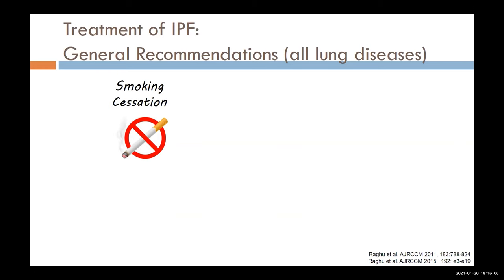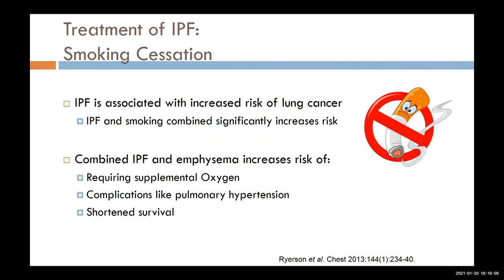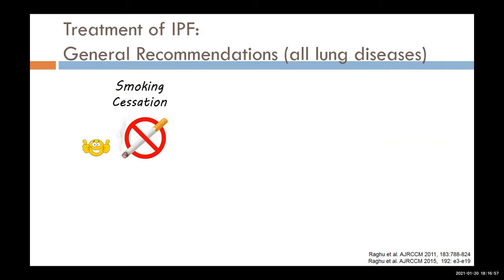The first treatment recommendation for all our patients — not just IPF — is to quit smoking. There are specific reasons for IPF patients. First, IPF is associated with a higher risk of lung cancer on its own, and when IPF patients smoke, they get an even higher risk. On top of that, having IPF with emphysema from smoking puts patients at higher risk of needing oxygen, higher risk of pulmonary hypertension complications, and we think these patients have a shorter survival with combined IPF and emphysema.